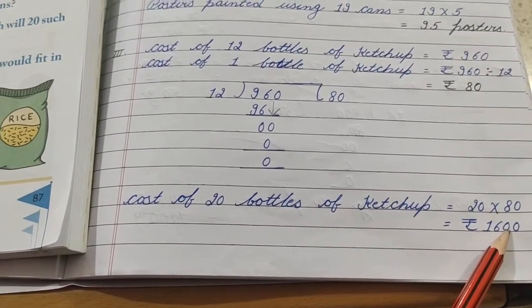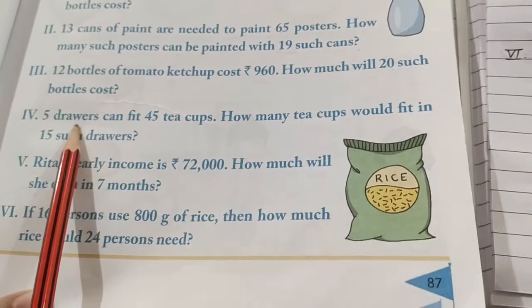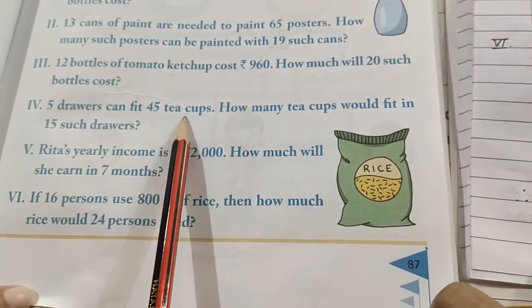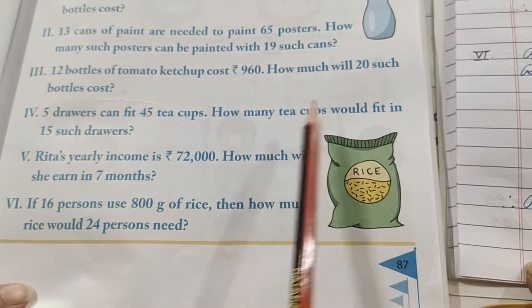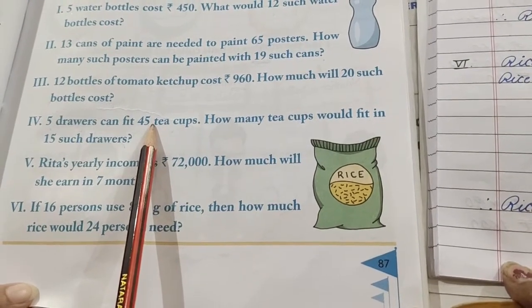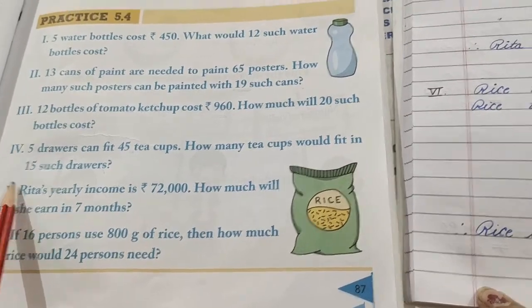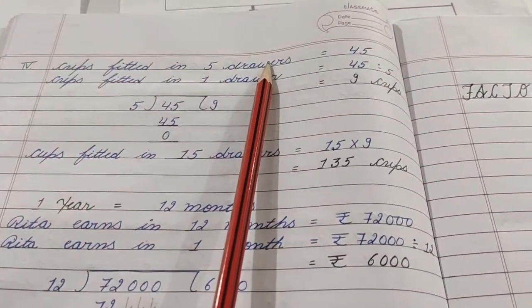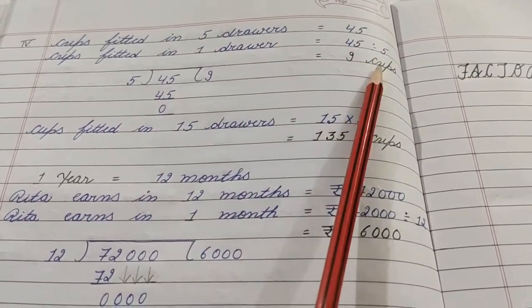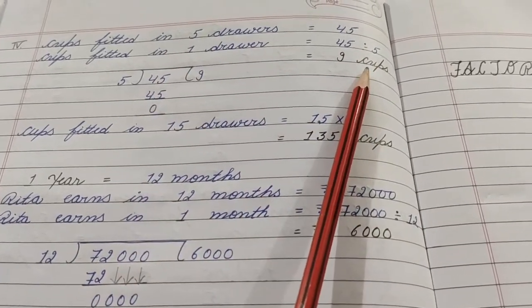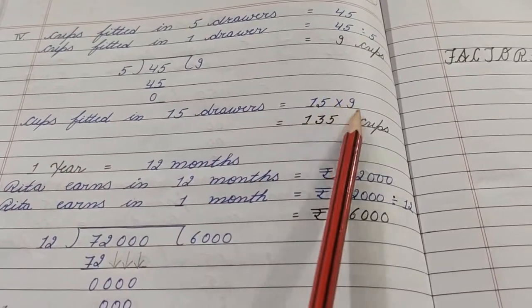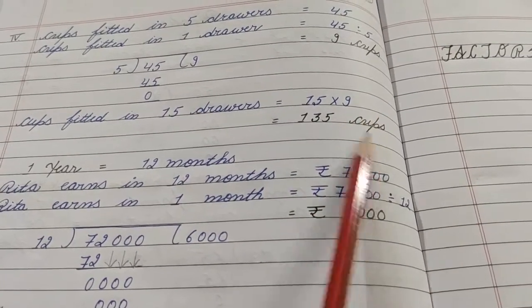Next sum: 5 drawers can fit 45 tea cups. So how many tea cups would fit in 15 drawers? 5 drawers have 45 cups. First we'll go to 1 drawer, and from 1 we'll come to 15 drawers. Now see the statement: cups fitted in 5 drawers equals 45. Cup fitted in 1 drawer, 45 divided by 5 equals 9 cups. Now if one drawer has 9 cups, then how many in 15 drawers? Cups fitted in 15 drawers equals 15 multiply 9, that is 135 cups. See the next statement.